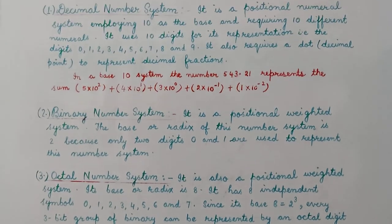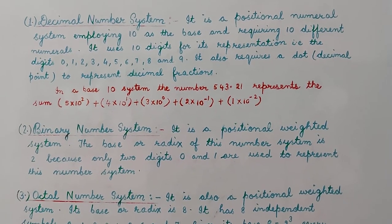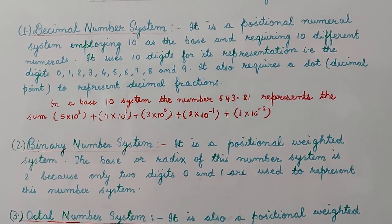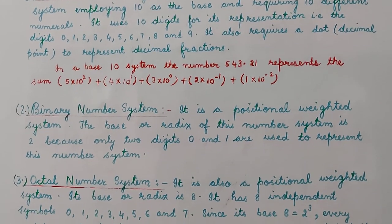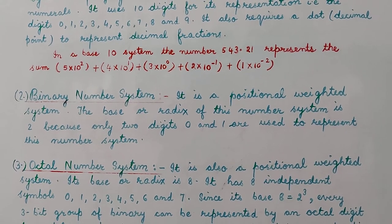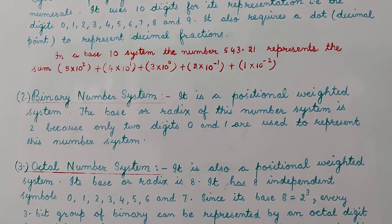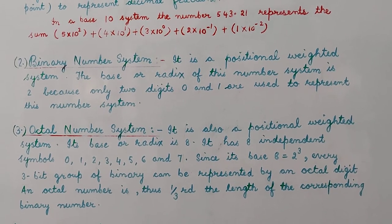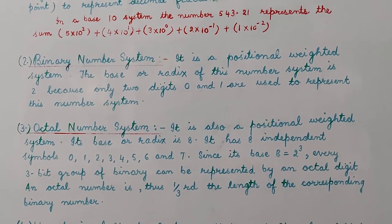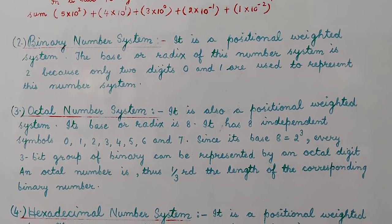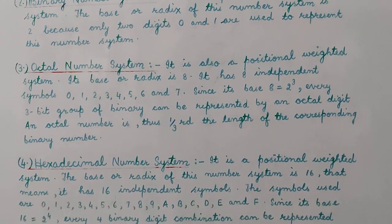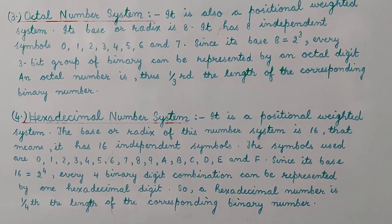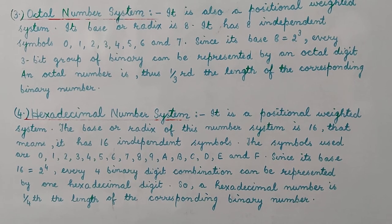In today's lecture we saw that the decimal number system uses 10 digits for its representation, so its base is 10. Similarly, the binary number system uses only two digits, so its base is 2. The octal number system uses 8 digits, so its base is 8, and the hexadecimal number system uses 16 digits, so its base is 16.